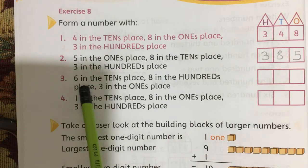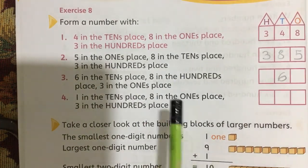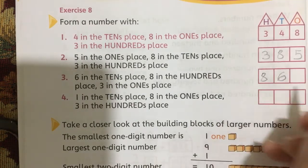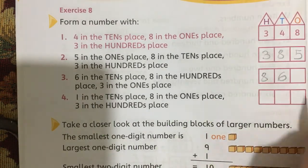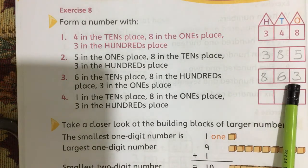Question number 3 is 6 in the tens place, write 6 in the tens place, 8 in the hundreds, 8 in the hundreds, and 3 in the ones place. So the number becomes 863.